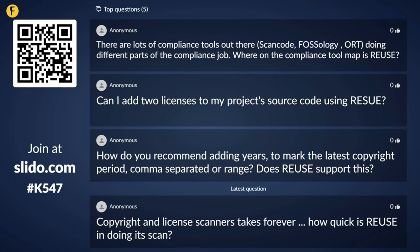Question: How do you recommend adding years to mark the latest copyright period — comma separated or using a range? And does Reuse support this? Generally, having multiple years in copyright information is a common practice, but to make things easier, we would recommend using the year in which the last change was made. The tool does support having multiple years, but the year in which you stopped modifying the file — the year of the most up-to-date version — is what we recommend putting in your copyright information.